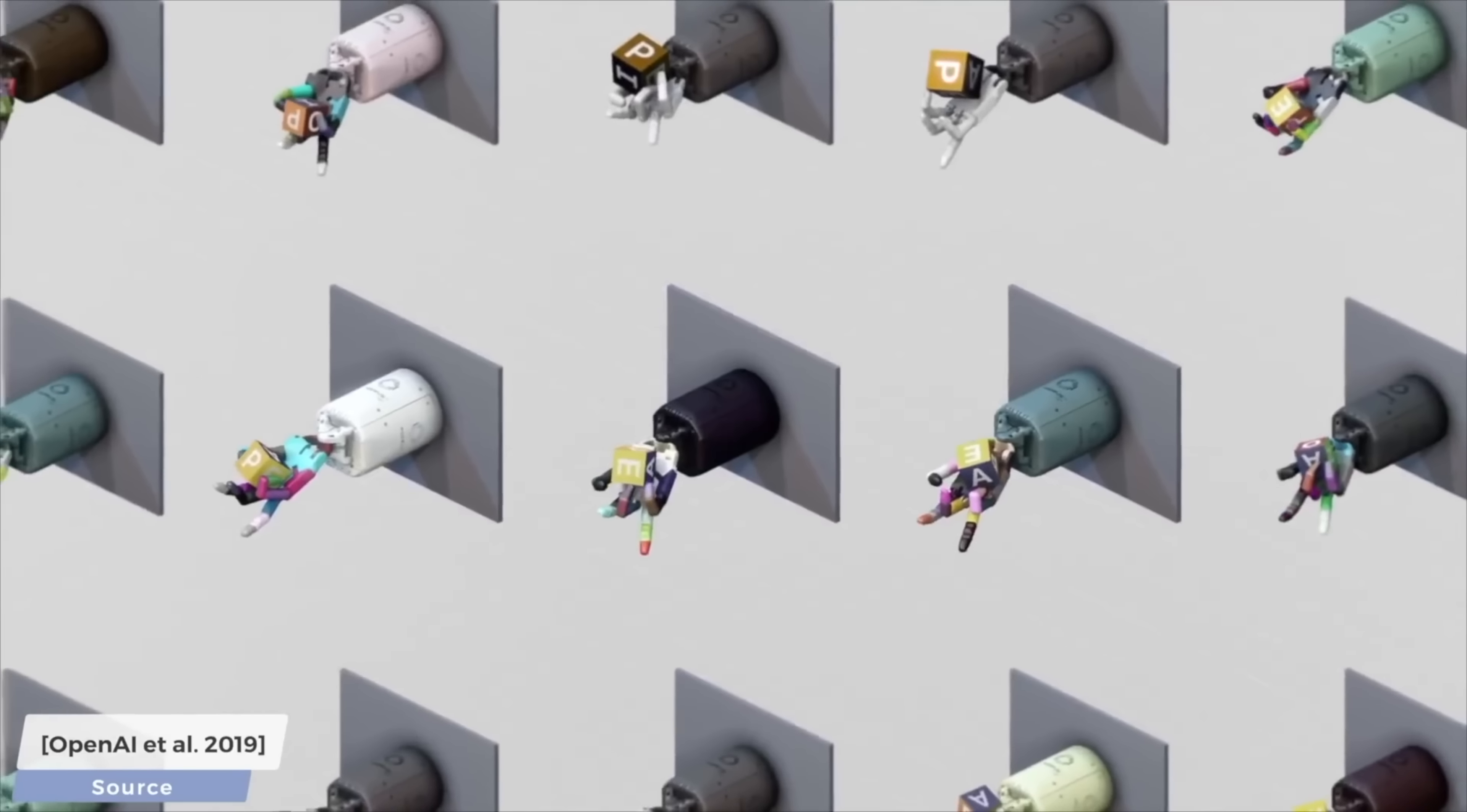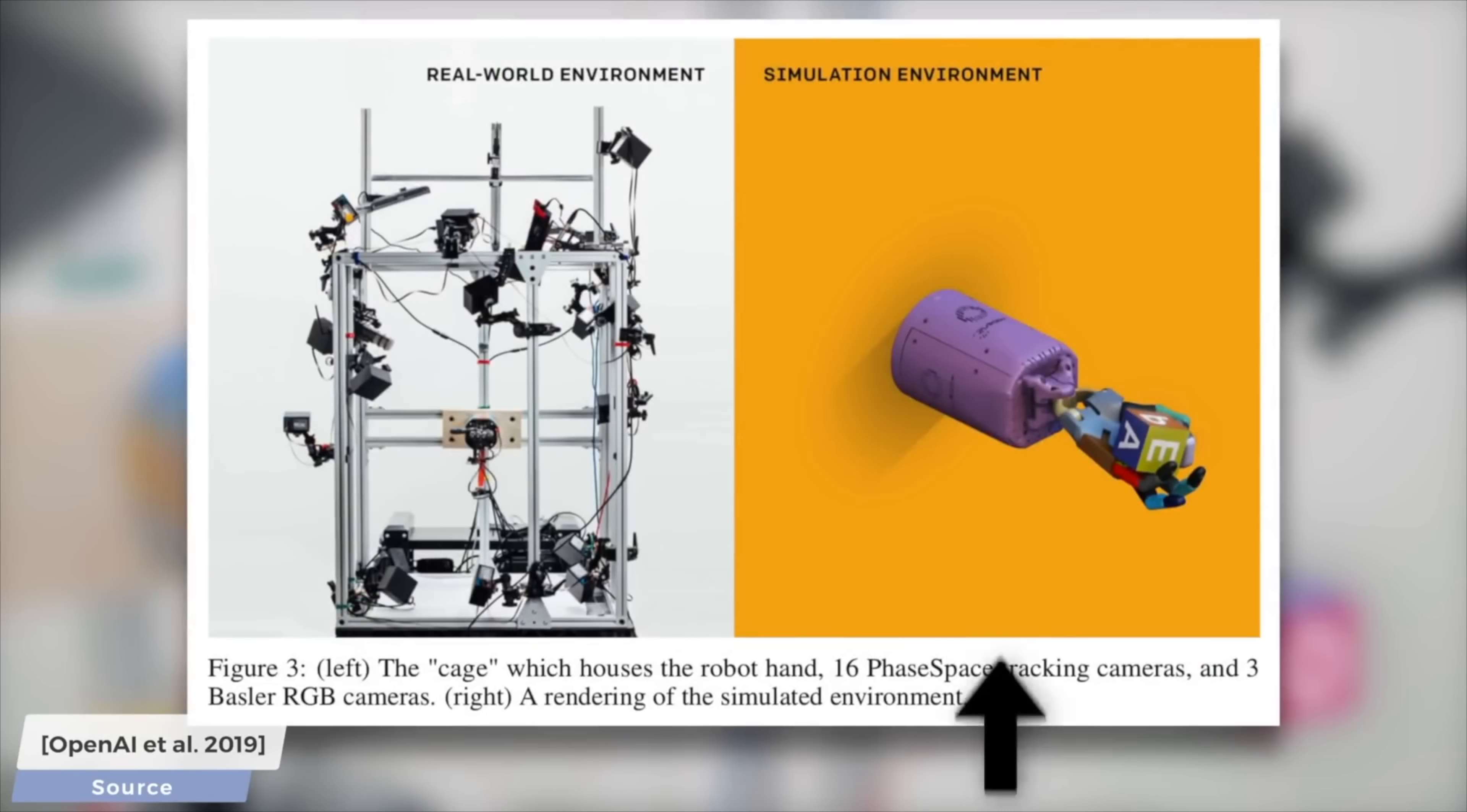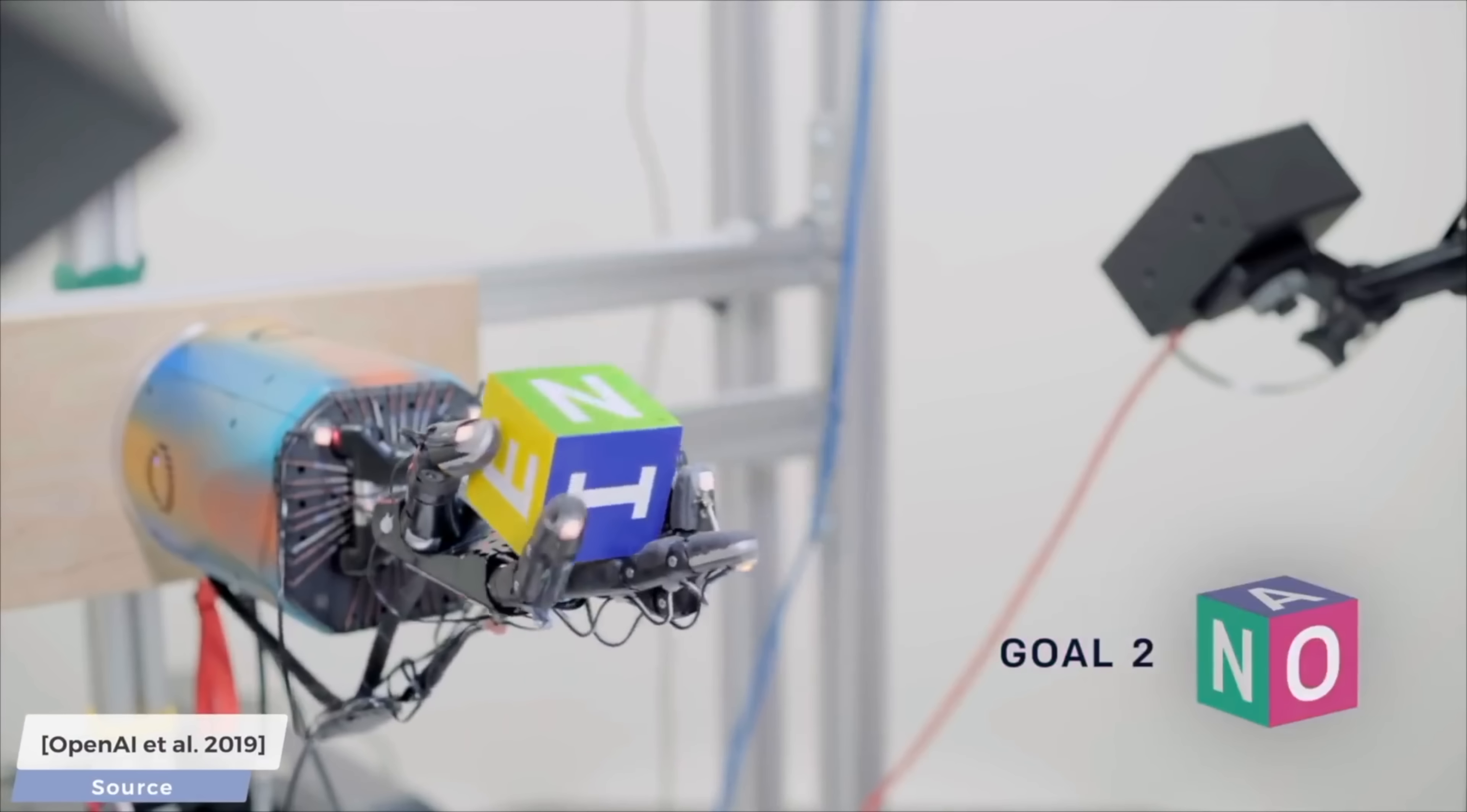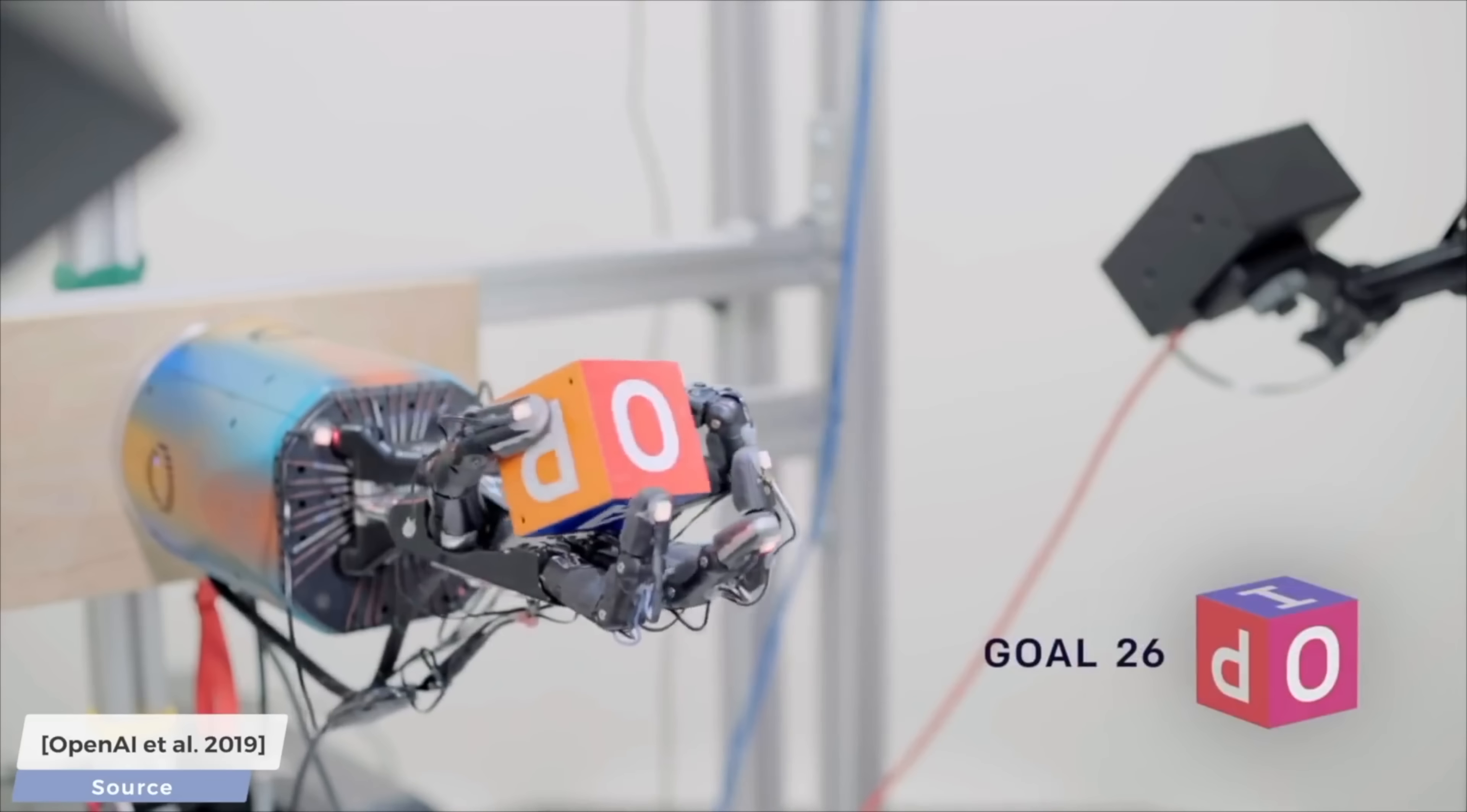OpenAI trained their robot hand in a simulation to be able to rotate these Rubik cubes. And then, deploy this software onto a real robot hand, and look, it can use this simulation knowledge, and now it works in the real world too.